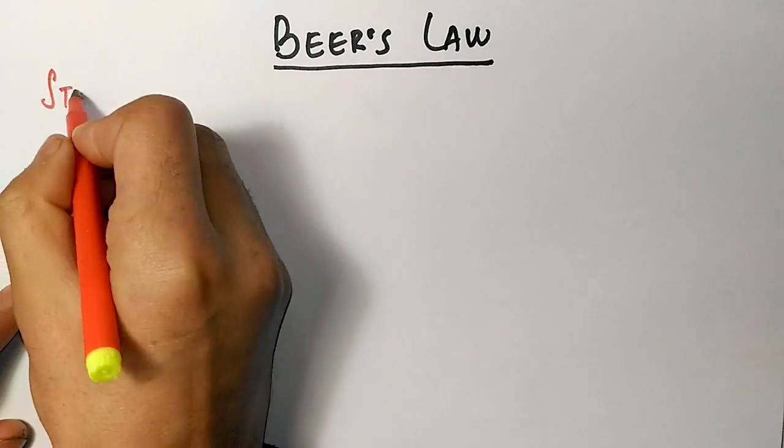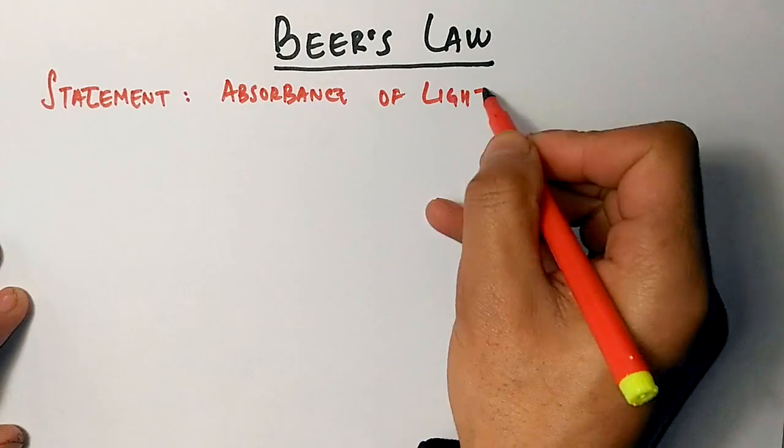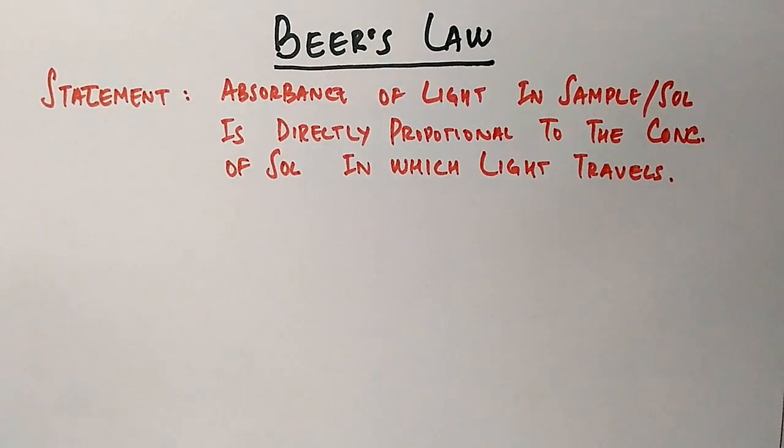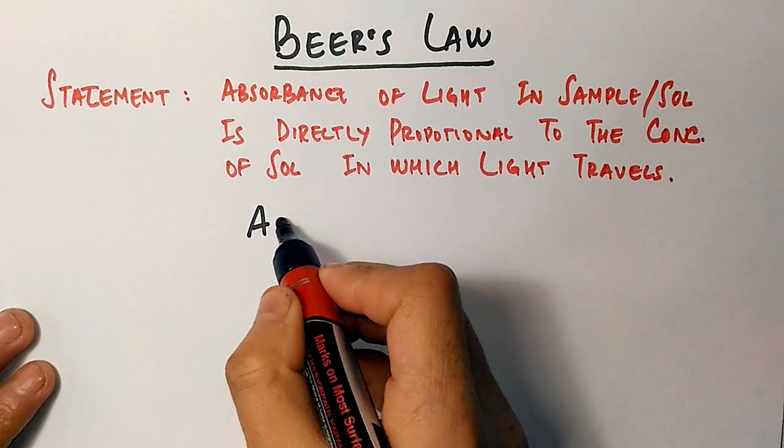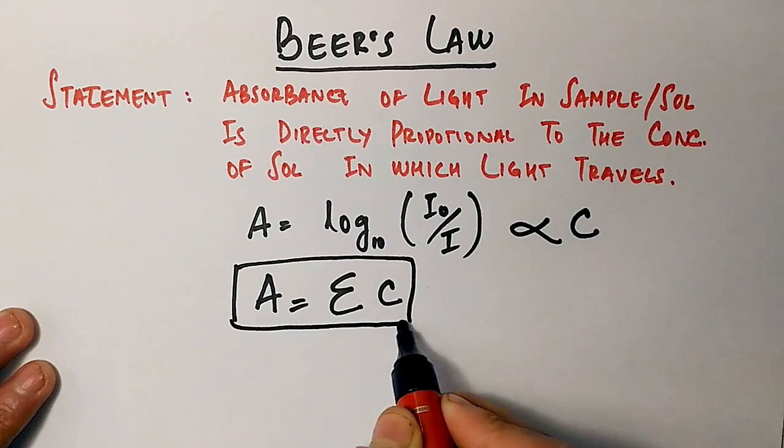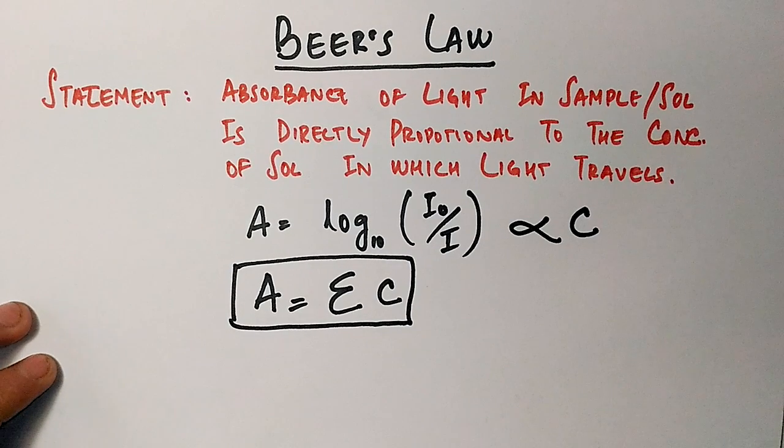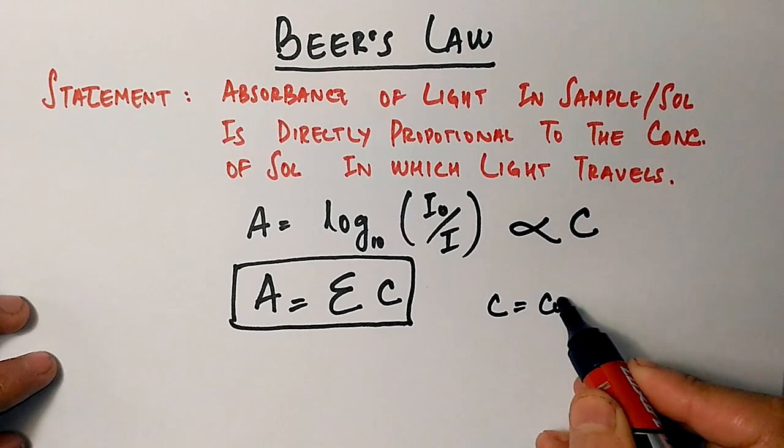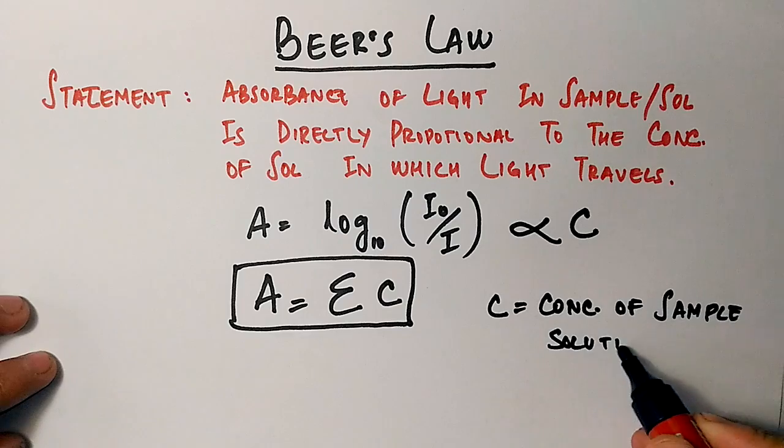On the other hand, we have Beer's law, which states that absorbance of light in sample or solution is directly proportional to the concentration of solution in which the light travels. Mathematically we can derive it as log of I₀ by I is directly proportional to concentration. This proportionality can be converted to equality when we include the epsilon constant, and finally we get the equation A equals epsilon C.